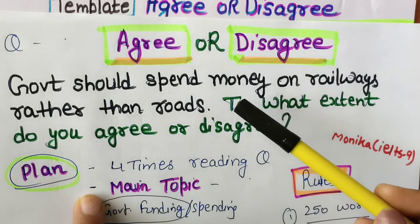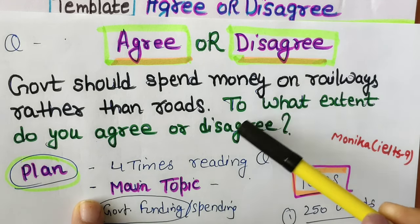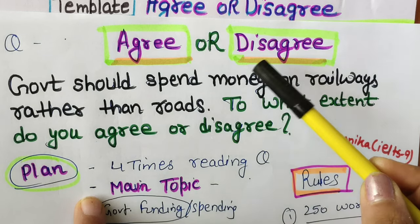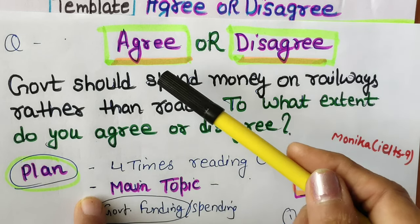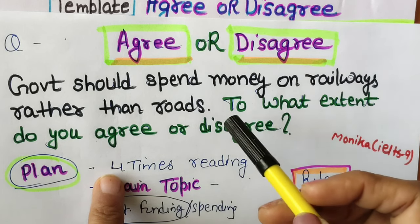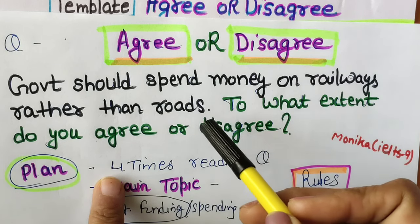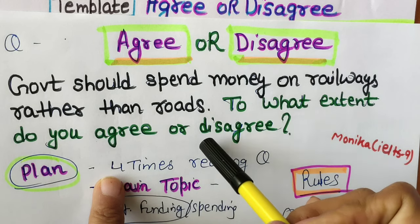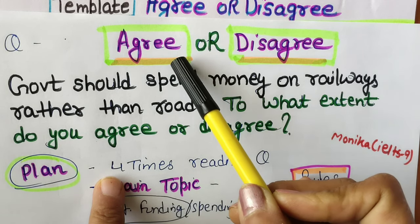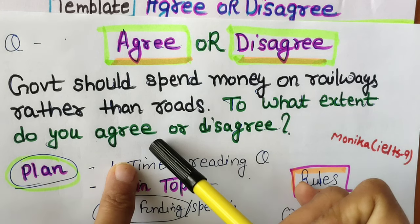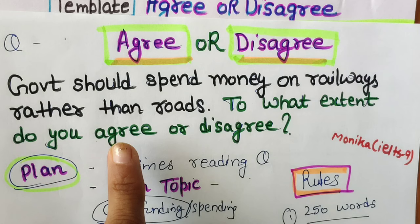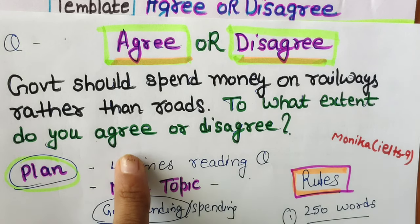There are many ways you can attempt this essay: you can go 100% agree, you can go 100% disagree, you can go partially agree, or you can write 'I agree up to a certain extent.' So there are three or four ways you can attempt it. I will show you every kind. Here we will discuss the fully agree essay first in this series.